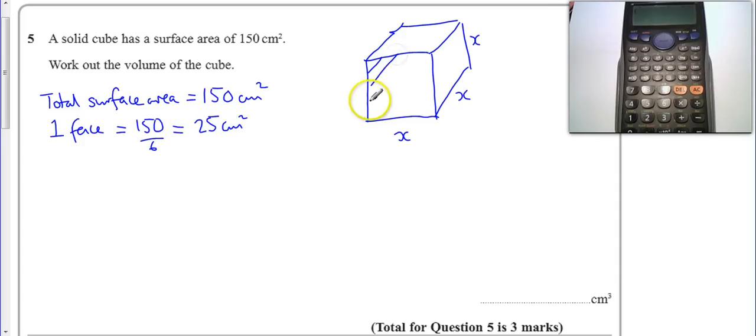So if I just consider one of the faces, in this case just the front face, I know that's 25cm cubed. So that tells me that the side must be 5cm, because 5 times 5 is 25, or the square root of 25 is 5.